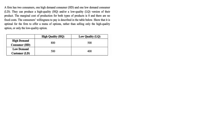Reading out the text on screen: we're told that a firm has two consumers — one high demand consumer (HD) and one low demand consumer (LD). The firm can produce a high quality version of their product (HQ) or a low quality version (LQ). The marginal cost of production for both types of product is zero, and there are no fixed costs.